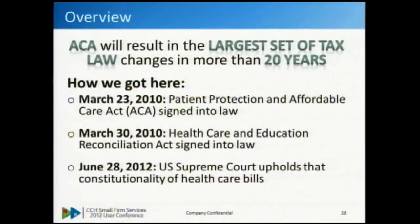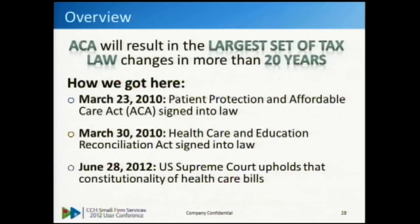ACA results in the largest set of tax law changes in over 20 years - the biggest one prior to that was TRA 86. ACA includes over 50 different tax provisions. We are not going to be able to cover all 50. We'll cover the ones that have the broadest and most immediate impacts to you.